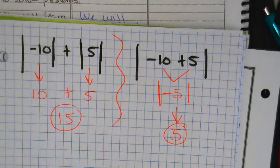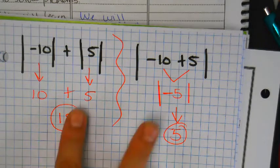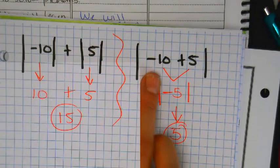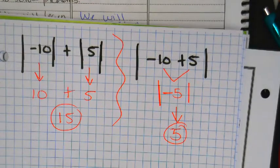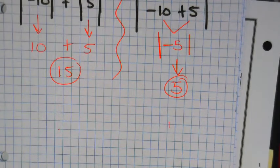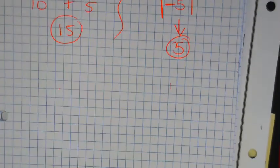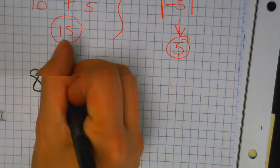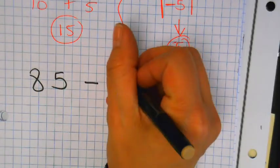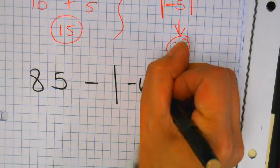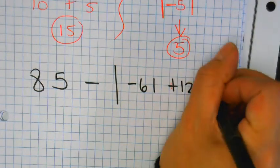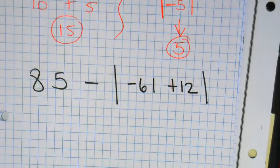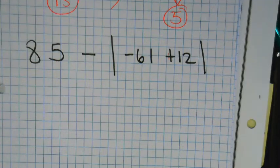Alright. You guys, when you get these on the homework, just go slower and realize these two will not have the same answer. They look the same. They have the same numbers involved, but those placement of the bars change everything. Alright, try to do this one. Eighty-five minus the absolute value of negative sixty-one plus twelve. Write it down.